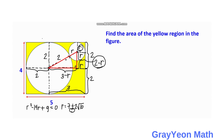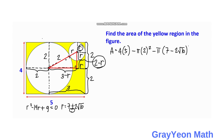For the final step, we find the area of the yellow region. Area equals the area of the rectangle, which is 4 times 5, minus the area of the larger circle, which is pi times 2 squared, minus pi times R squared, where R is 7 minus 2 root 10. So we have: Area = 20 minus pi times 4 minus pi times (7 minus 2 root 10) squared.